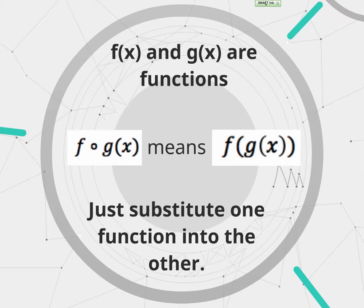So if I've got two functions, f of x and g of x, this symbol right here with the f and that little circle and the g and the parentheses x, what it means is I'm putting that g of x function and I'm substituting it into the f of x function. So we don't say that the way I just said it. We would say f of g of x.